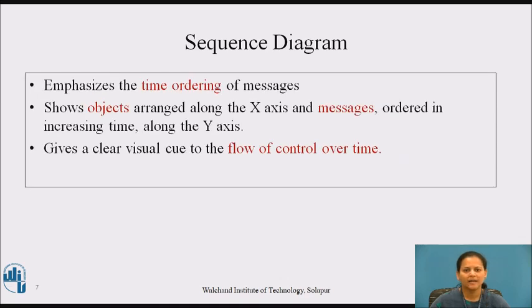Sequence diagrams and collaboration diagrams are called interaction diagrams. An interaction diagram shows an interaction consisting of a set of objects and their relationships including the messages that may be dispatched among them. A sequence diagram is an interaction diagram that emphasizes the time ordering of messages.